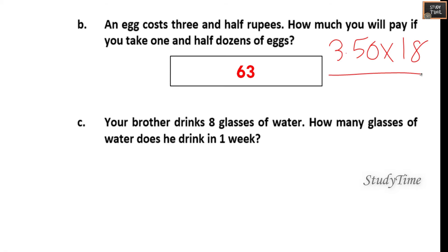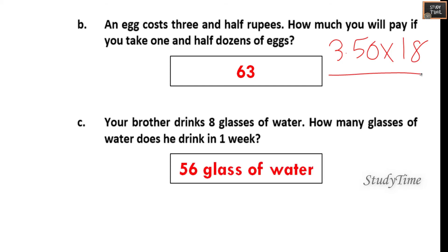Your brother drinks 8 glasses of water. How many glasses of water does he drink in one week? 8 into 7 is 56 glasses of water.